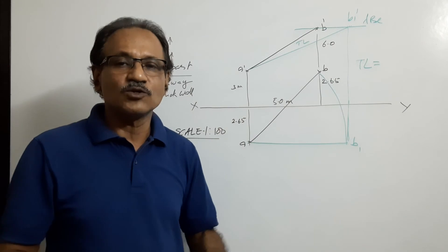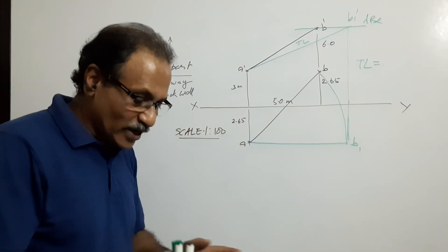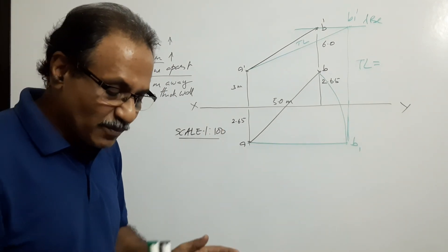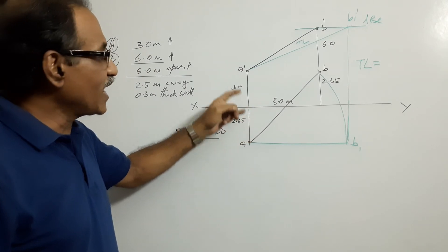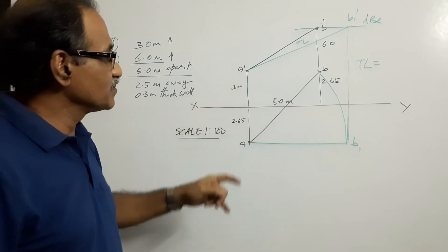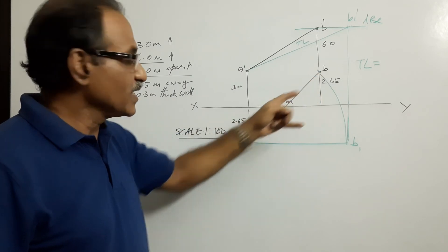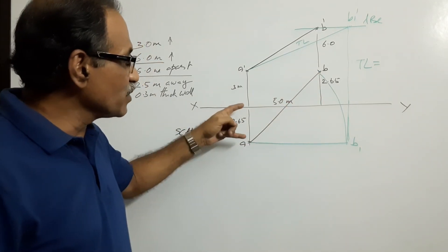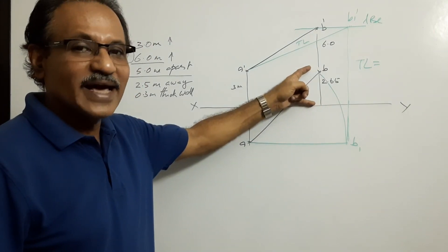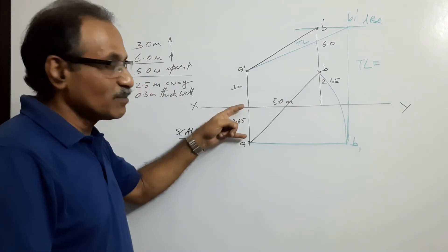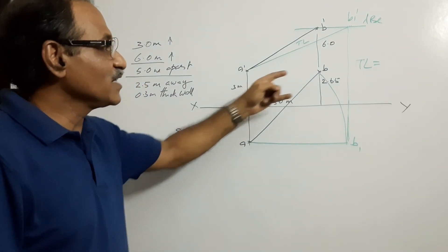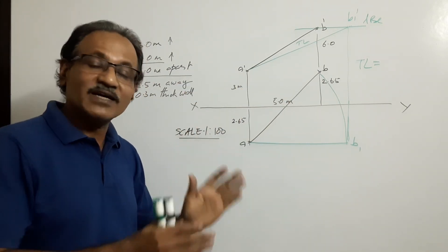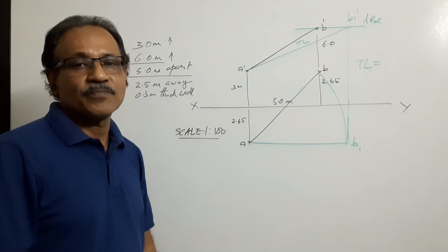You are free to choose where to place the VP relative to the wall. If you take VP on one side, the distances become 2.5 and 2.5 + 0.3 = 2.8 meters. If you take VP on the other side, they swap to 2.8 and 2.5. Either way, it makes no difference to the solution — you will get the same true length regardless of where you assume the VP.